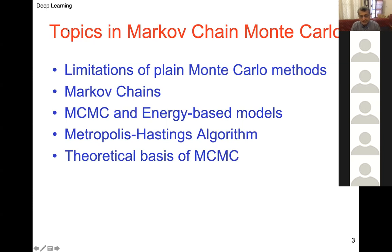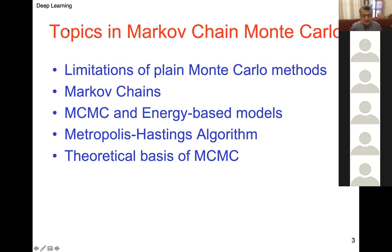In deep learning, the only Metropolis-Hastings type algorithm actually used is Gibbs sampling, so we don't need the full general formulation. But we'll look at it because there is a lot of literature on Metropolis-Hastings. The last part is a theoretical justification of why MCMC is the appropriate approach.